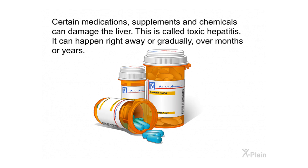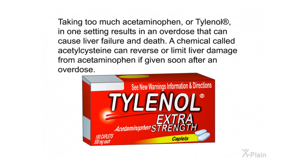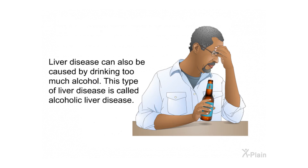Certain medications, supplements, and chemicals can damage the liver — this is called toxic hepatitis. It can happen right away or gradually over months or years. Taking too much acetaminophen (Tylenol) in one setting results in an overdose that can cause liver failure and death. A chemical called acetylcysteine can reverse or limit liver damage from acetaminophen if given soon after an overdose. Liver disease can also be caused by drinking too much alcohol; this type is called alcoholic liver disease.